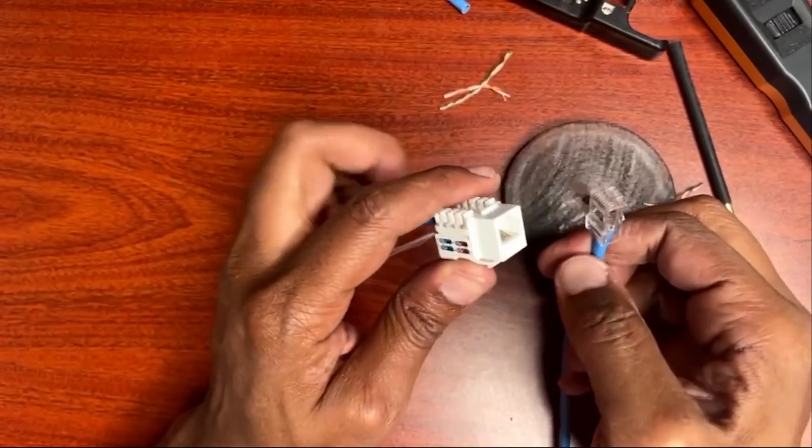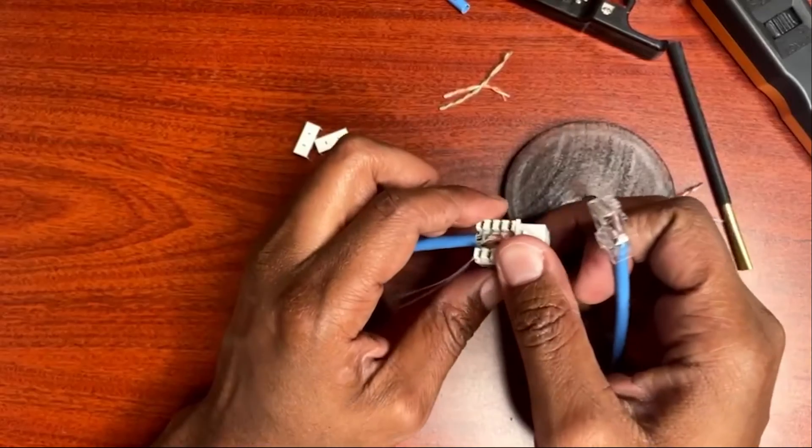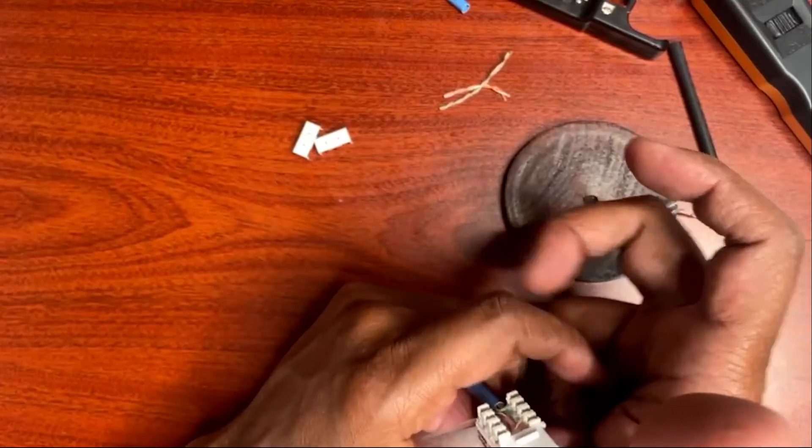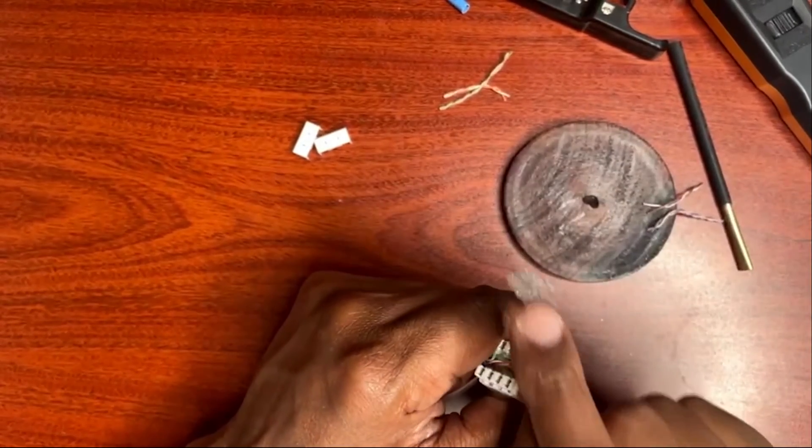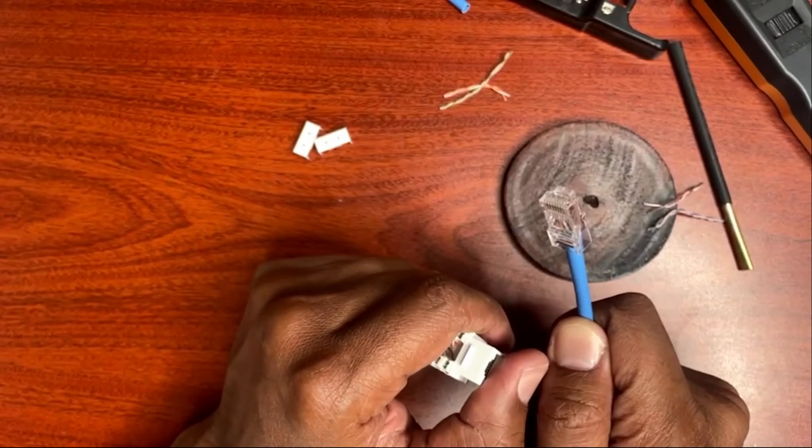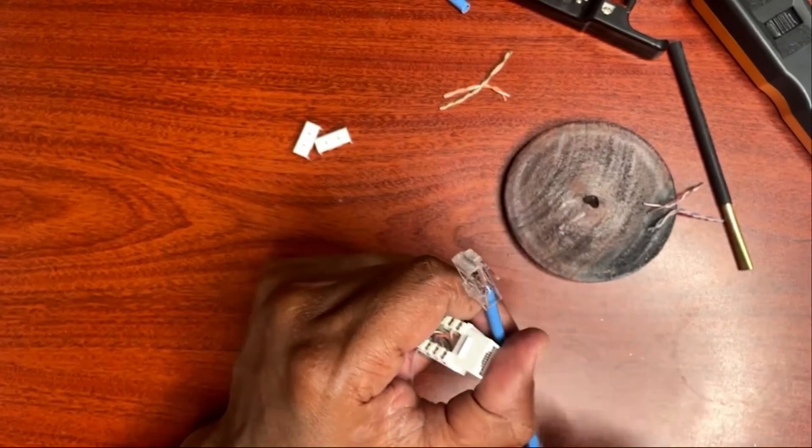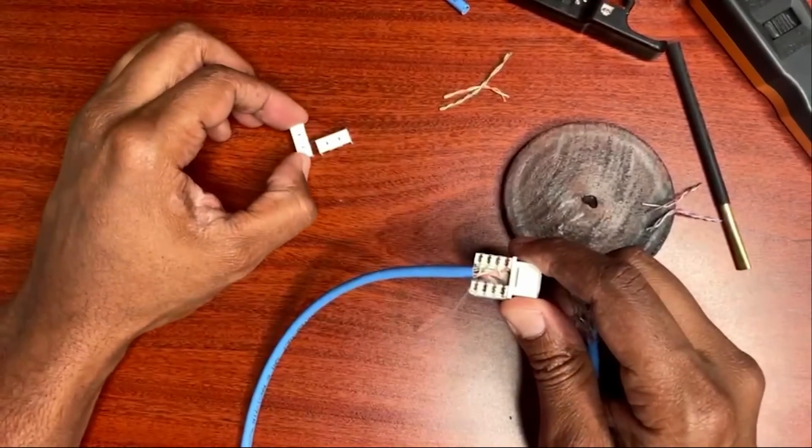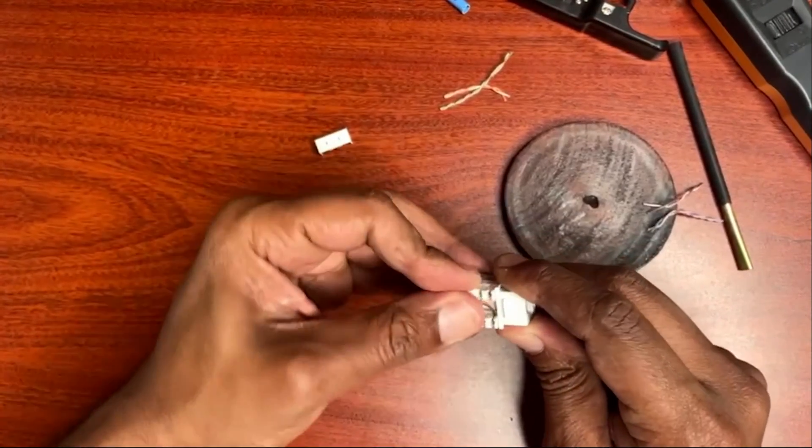So that right there is just a demonstration of how to terminate a CAT6 RJ45 Keystone Jack. You can go back on the video and learn how to do the other end that I did last week. That wraps up today's video, people. Like, listen, subscribe to FTech101 aka Black Manta. Look forward to bringing more content to you all soon.